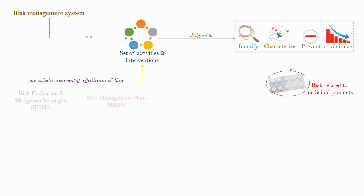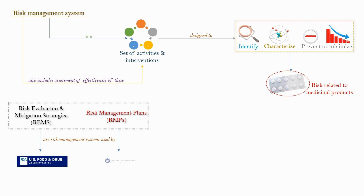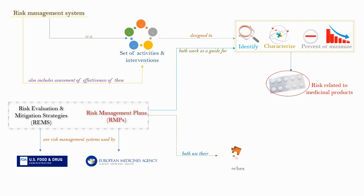Risk evaluation and mitigation strategies and risk management plans are risk management systems used by FDA and EMA respectively. Both REMS and RMP work as a guide for identification, characterizing, preventing or minimizing the risks linked to the medicines. Both use their own approaches but have the same objective of safe use of medicinal products.